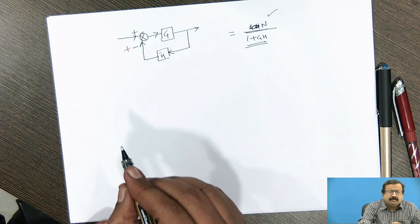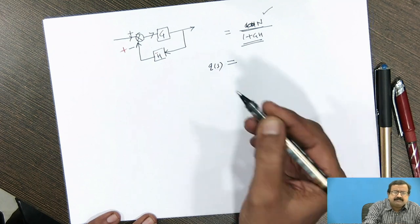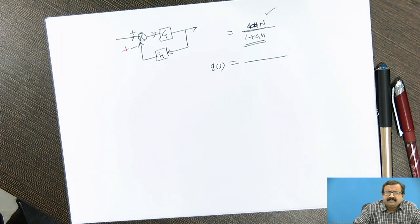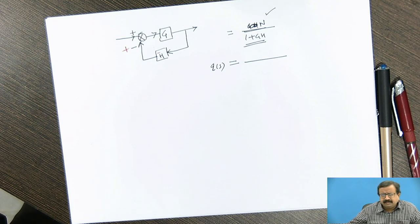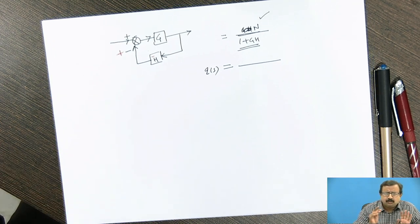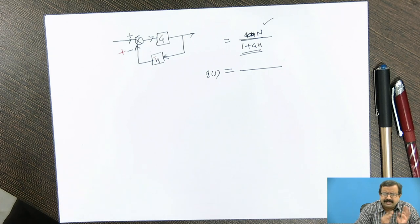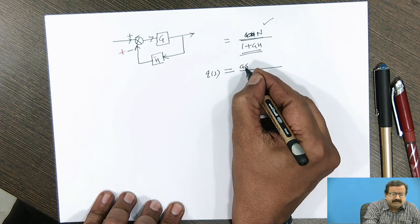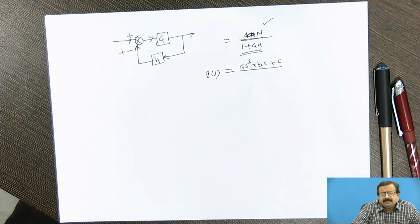Now the next thing is for this 1 plus GH, what will happen? This will be a polynomial in S. There is some polynomial in S. Now what is the degree of polynomial? That degree of polynomial may be linear, it may be quadratic, third order, fourth order, nth order polynomial I can have. But today we are restricting ourselves to the equation which is our characteristic equation which we are getting in the form of a quadratic. Suppose it is AS square plus BS plus C.